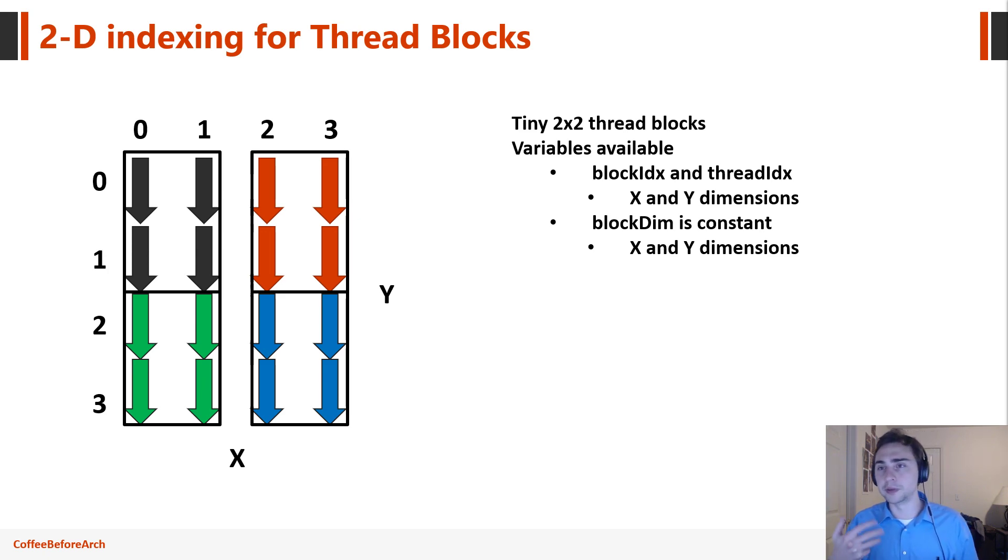So we'll have these tiny 2x2 thread blocks. The thread blocks will be denoted by the outline, and then also the different colors. And we have these same variables available, but we have to remember that they can be in two dimensions. So we have block idx, which gives us which block number we are in the x and y dimensions. And then we have thread idx, which tells us which thread we are within a thread block in the x and y dimensions. And then we have block dim, which is a constant in both the x and in the y direction. They can be different in the x and y dimension, but this is just a number of threads per thread block type variables. So this is going to be constant for every single thread block.